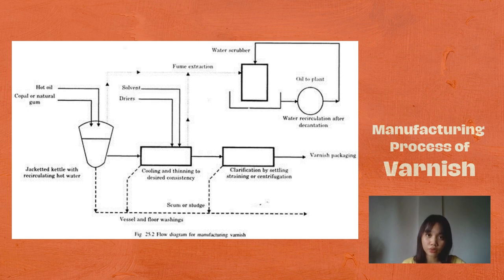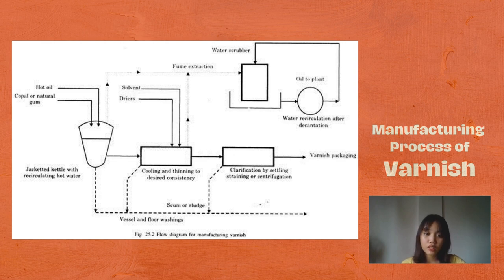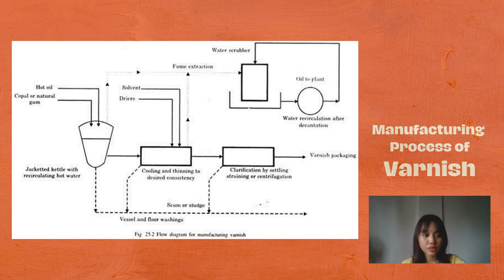The sixth step is quality control. Before packaging, the varnish undergoes rigorous quality control checks that assess factors like viscosity, drying time, color, and other properties to ensure the varnish meets specific standards. The final step is packaging, where the finished varnish product is packaged in containers such as cans or bottles, ready for distribution and use. Overall, the manufacturing process of varnish requires precision, adherence to quality standards, and consideration of the intended applications of the varnish product.